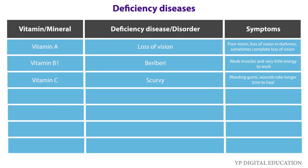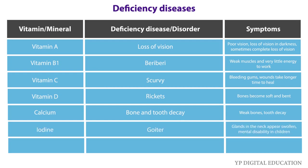Vitamin D: the disease due to deficiency of vitamin D is rickets — bones become soft and bent. Calcium: the disease due to lack of calcium is bone and tooth decay, with symptoms of weak bones and tooth decay.